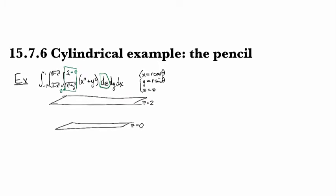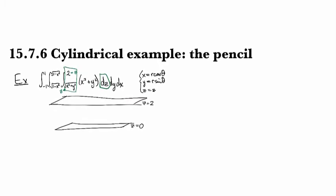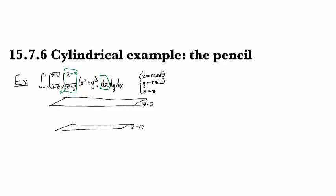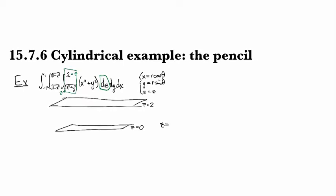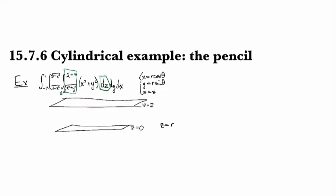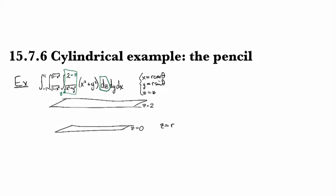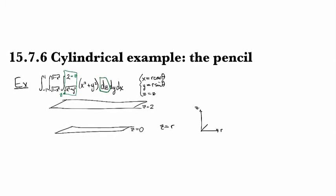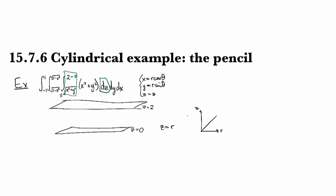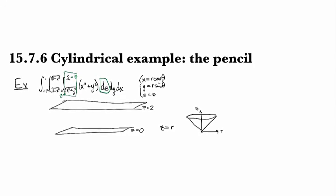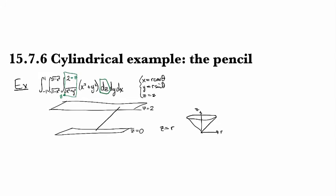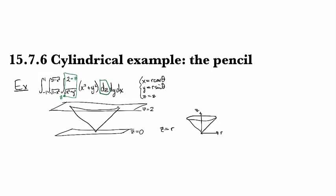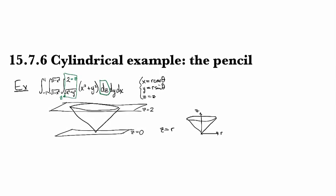Then we have the bottom bound integration telling us z equals r, that one we can do a little sketch. Okay, so what does that look like? If I've got r going this way, and I've got z going this way, then it's this 45 degree angle line, and then I spin it, and so I'm going to get a cone. Okay, so I've got a cone that goes like that, so up at the top we've got a circle of radius 2 in this plane up here.